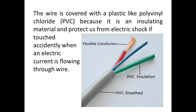The wire is covered with a plastic-like material — polyvinyl chloride (PVC) — because it is an insulating material through which current does not flow. It protects us from electric shock. These wires are covered with insulating covering to protect us from electric shock if touched accidentally when electric current is flowing through the wire.